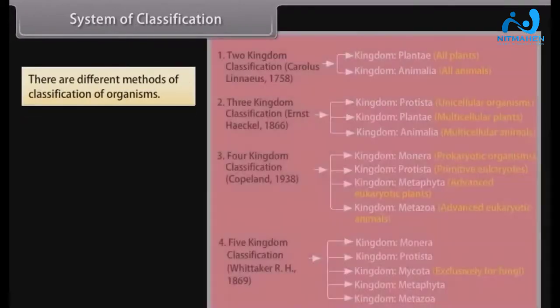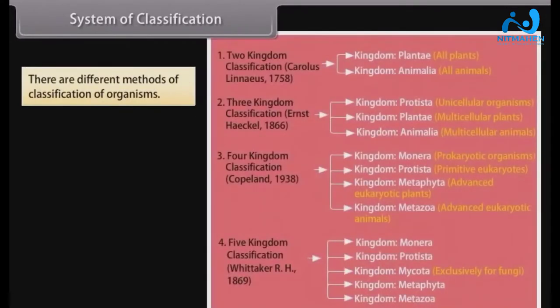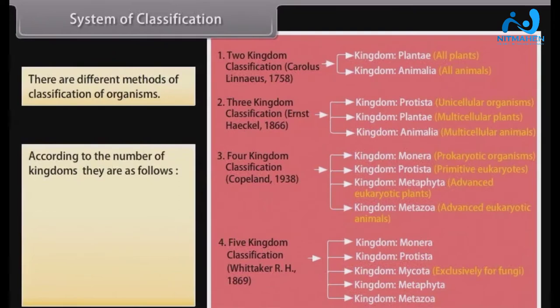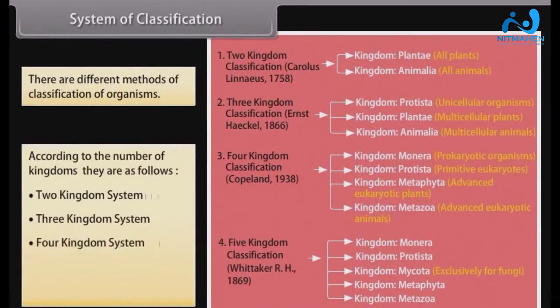There are different methods of classification of organisms. According to the number of kingdoms, they are: the 2 Kingdom System, 3 Kingdom System, 4 Kingdom System, 5 Kingdom System, and 6 Kingdom System.